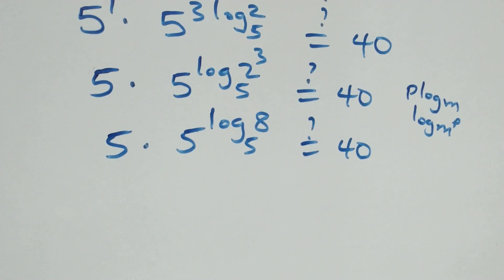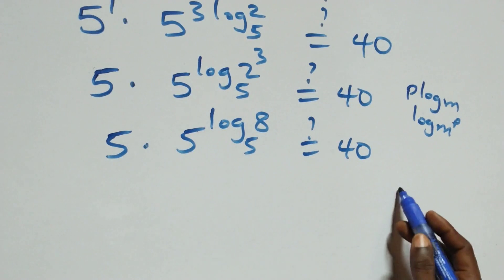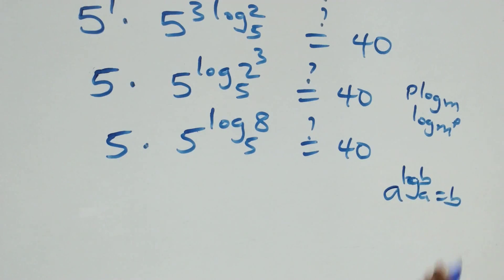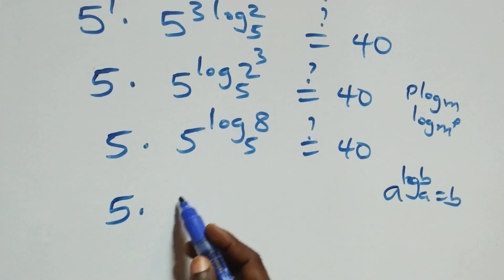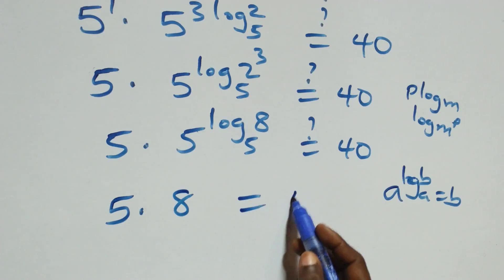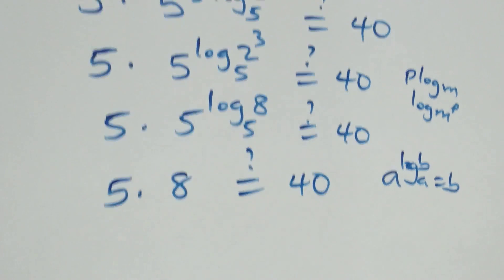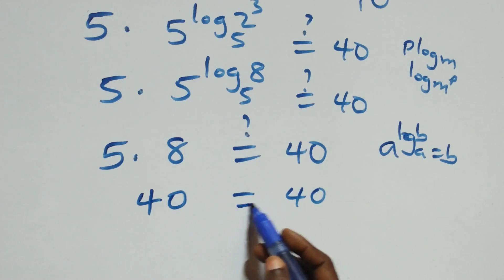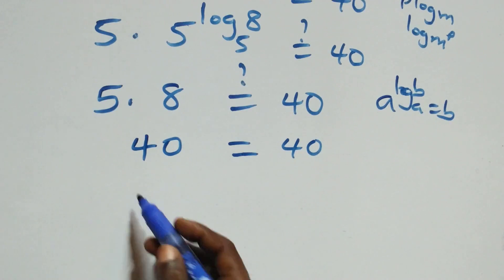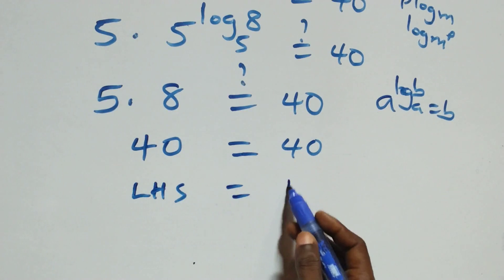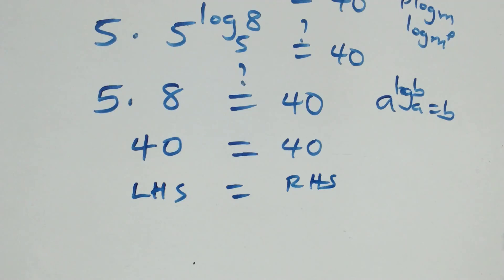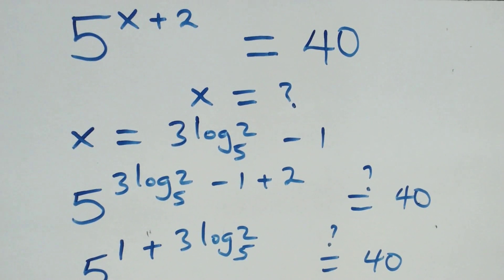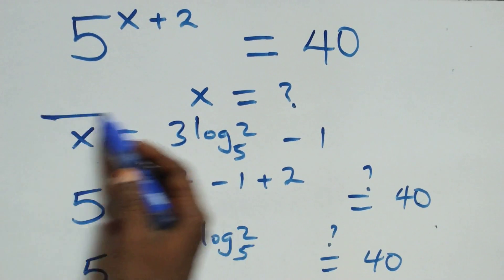This follows from the rule: a raised to power log_a(b) equals b. For this, we have 5 times 8, which equals 40. And of course, 5 times 8 equals 40, which equals 40. Left hand side equals right hand side. Therefore, we conclude that x equals 3 log₅2 minus 1 satisfies the given problem.